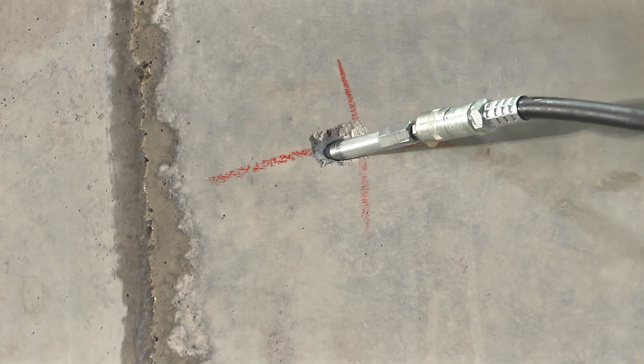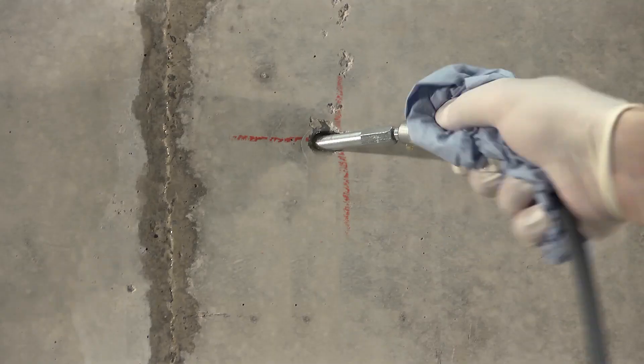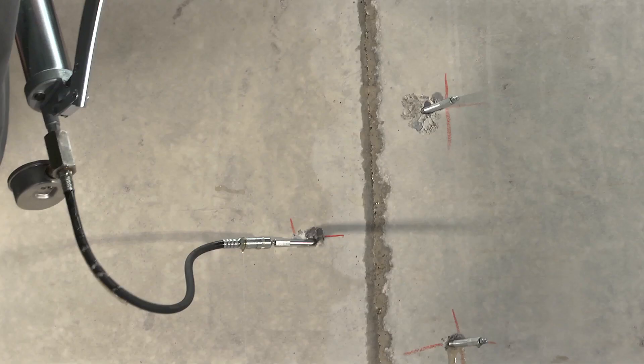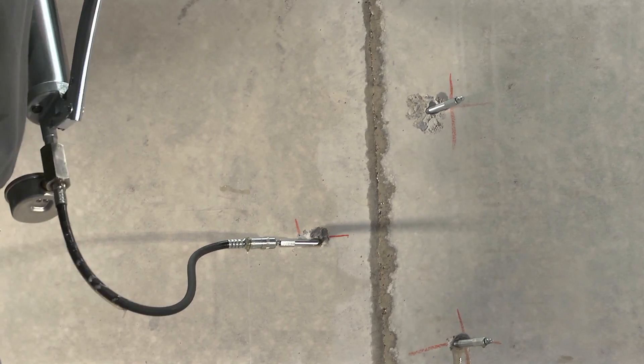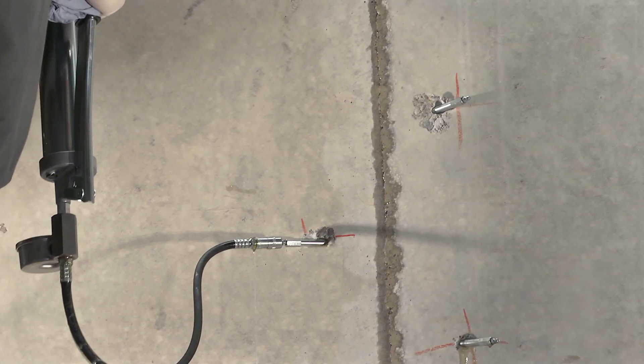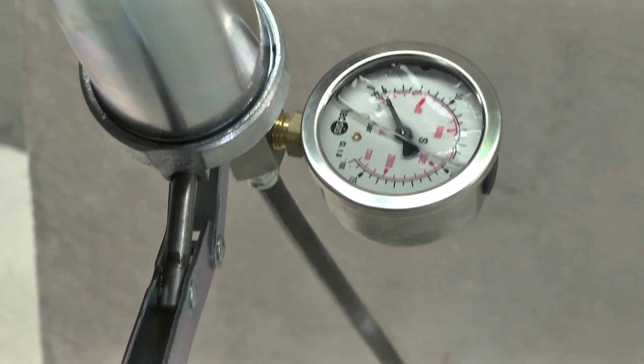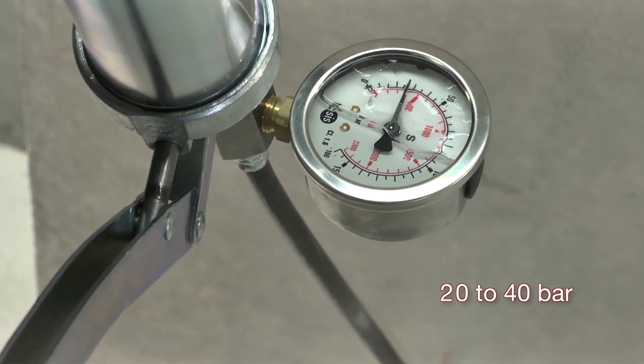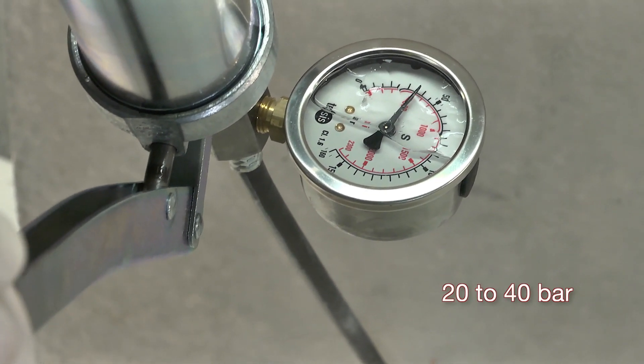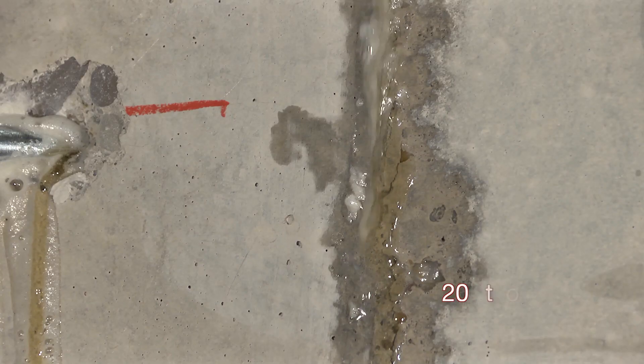Inject Intectin Blitz into the leaking crack or joint using the already positioned packers. For vertical cracks, the ideal injection procedure is to start with the lowermost packer and work your way to the top in a step-by-step manner. For horizontal cracks, start on one side and work your way across to the other side. Injection pressures should be in the range of 20 to 40 bar but should never exceed 80 bar.